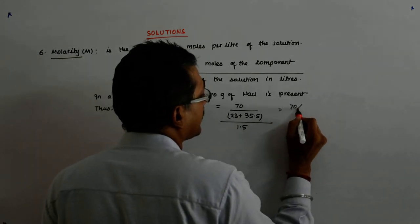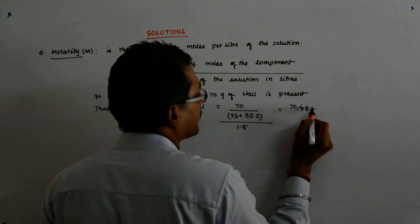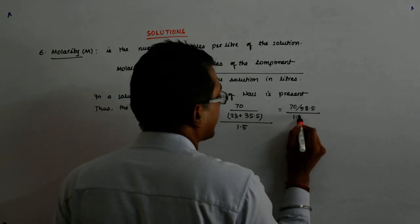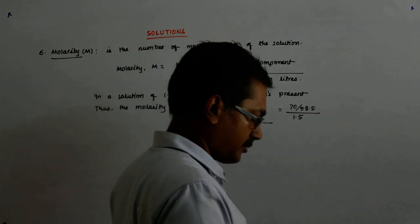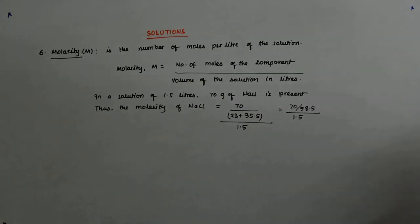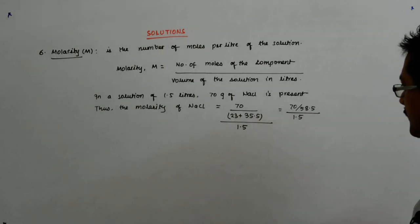I get 70 upon 58.5 divided by 1.5. Correct? So let me use the calculator. What happens?